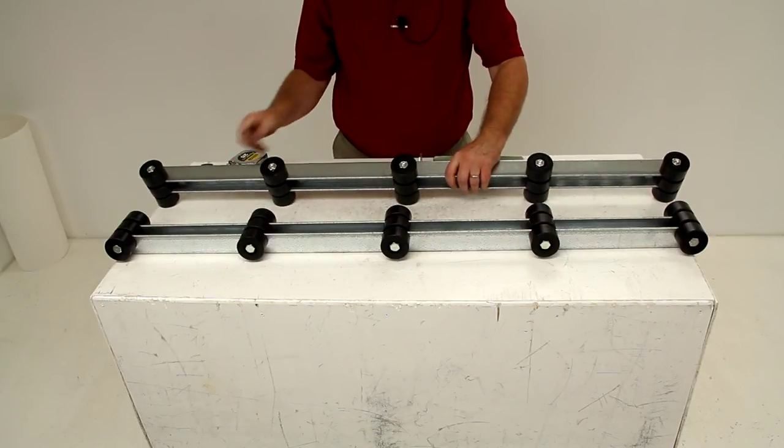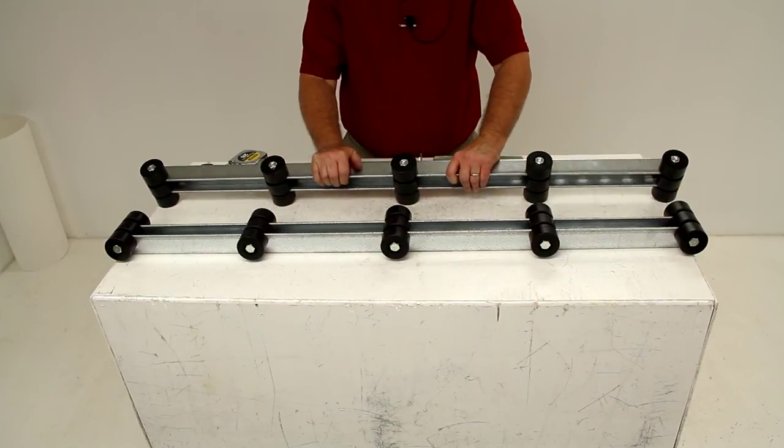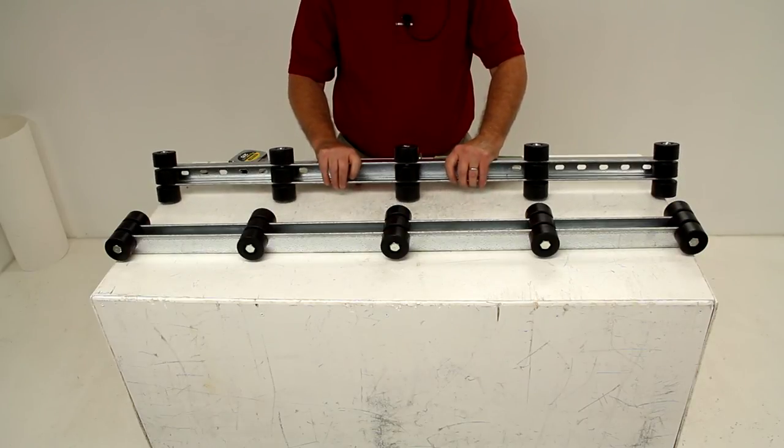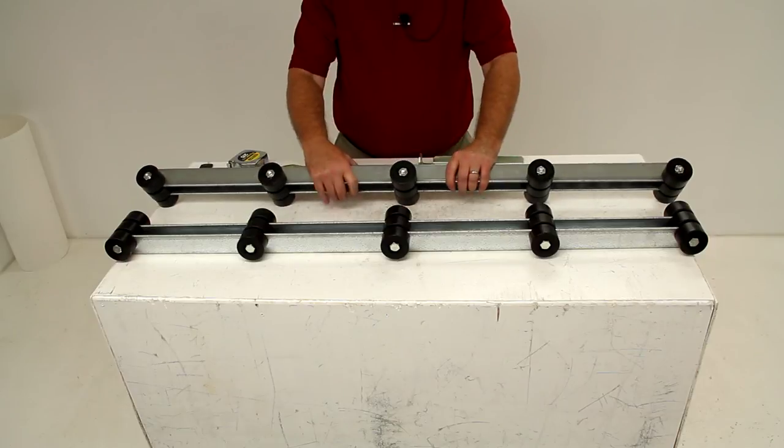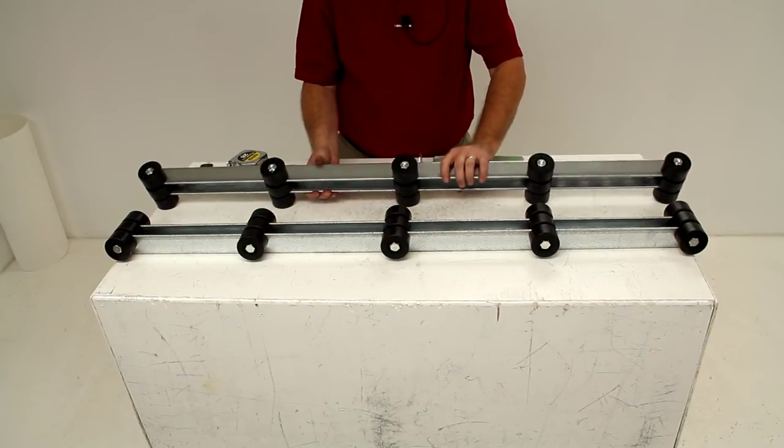These roller bunks, both of them, have a maximum weight capacity of 2,500 pounds. This part is made in the USA, and that should do it for the review on part number DL21740.